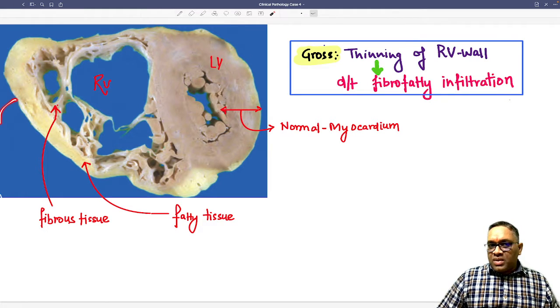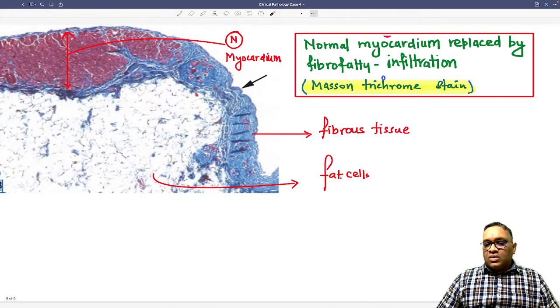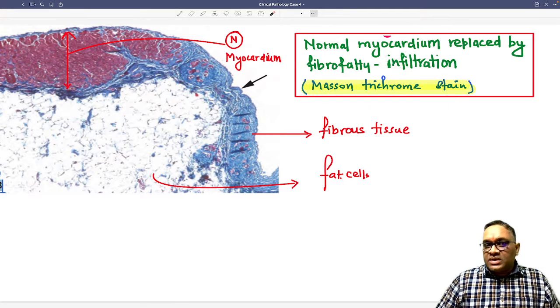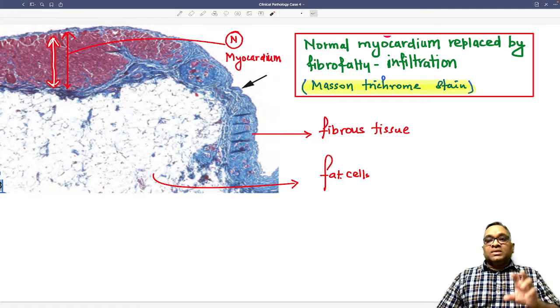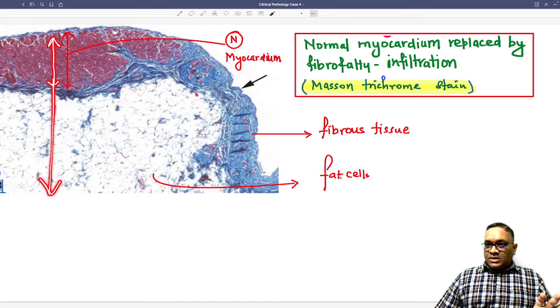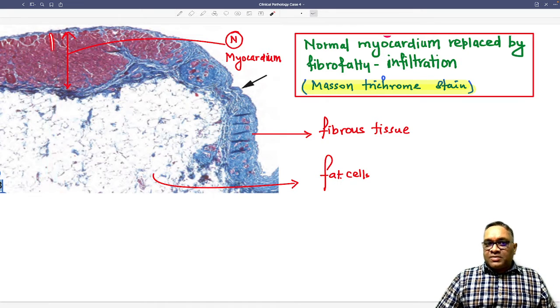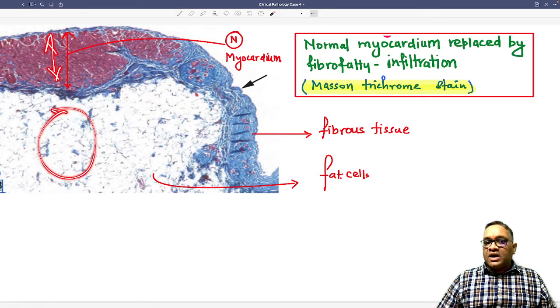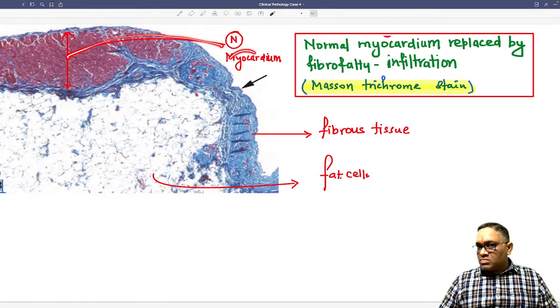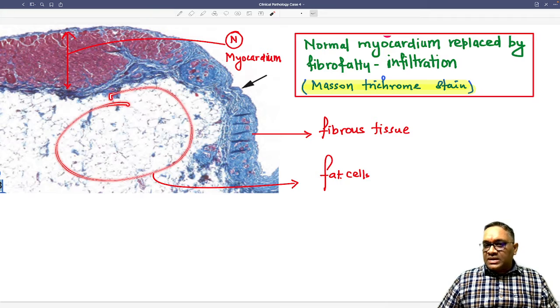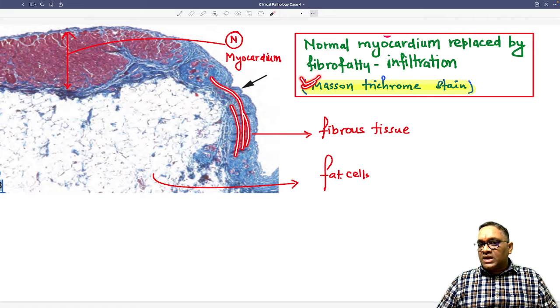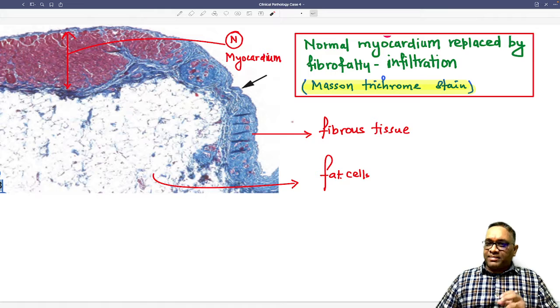That same thing we are going to see on microscopic examination also in the right wall. When you take the section from here, this is a special stain called Mason trichrome stain. This red color appearance is the normal myocardium. This red color of the myocardium normally should be this thick, but now what has happened, this has been reduced to this much because this area and this area has replaced the normal myocardium.